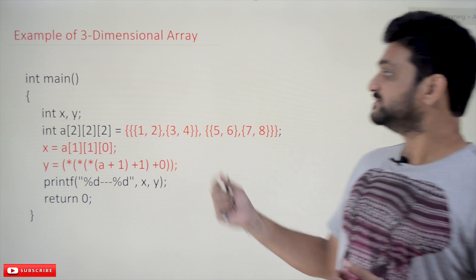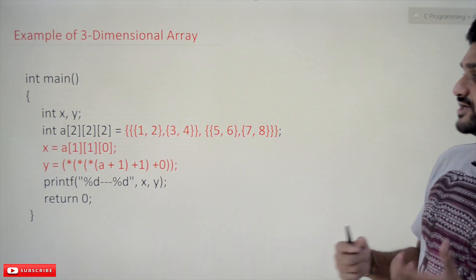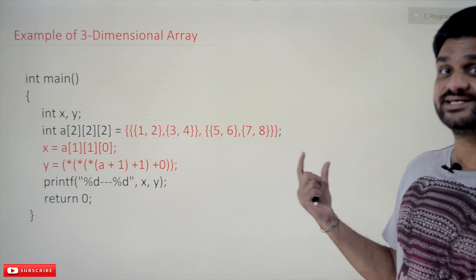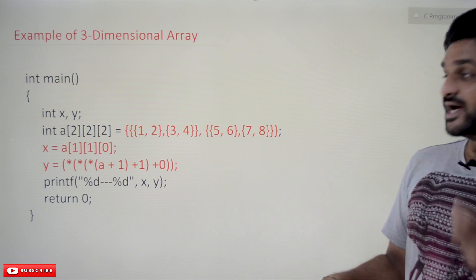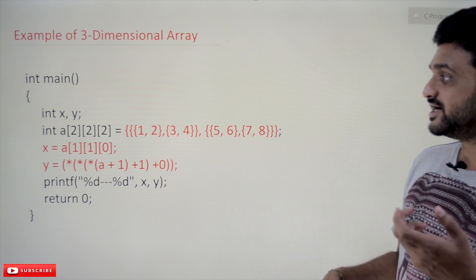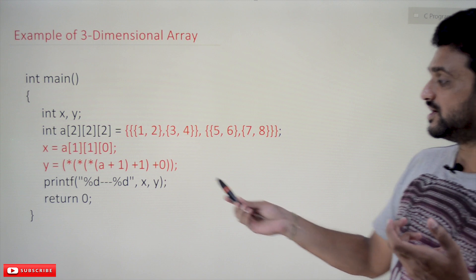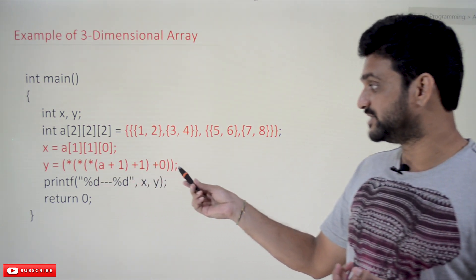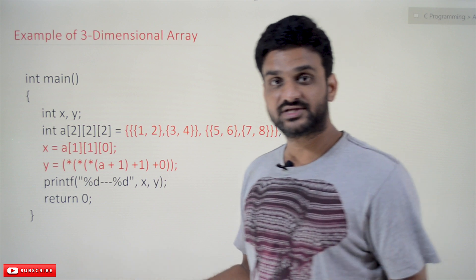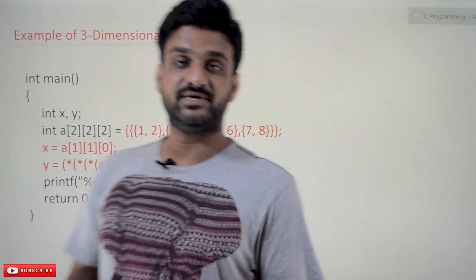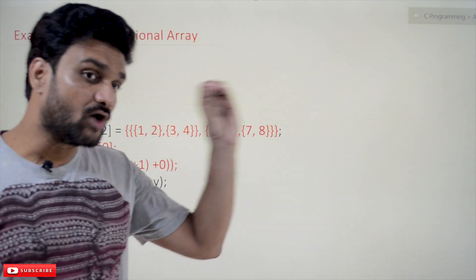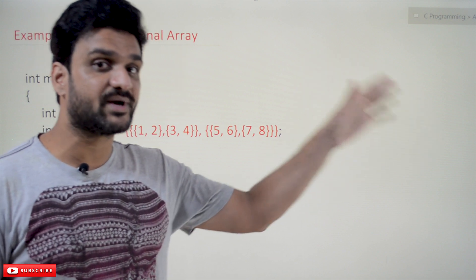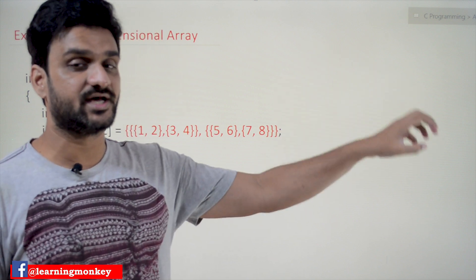In this example we will try to understand another way of initializing elements to an array. Next, we will try to access the elements by using array arithmetic. The concepts of array arithmetic — how elements of an array can be accessed using array arithmetic — will also be covered in this class.